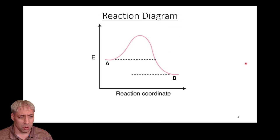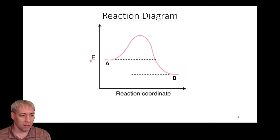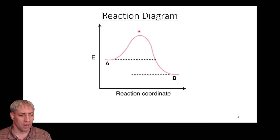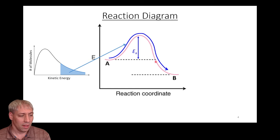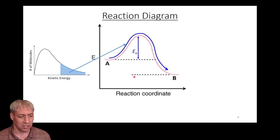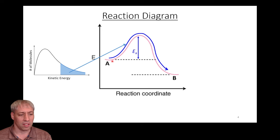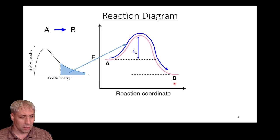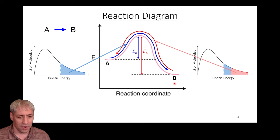We've seen this reaction coordinate diagram many times. We have reaction progress on the x-axis, energy on the y-axis, species A and B, and a one-step reaction with a transition state at the top. We've talked about the relationship between activation energy and rates of reactions — if A has enough energy, it can go over this hill and transform into B.